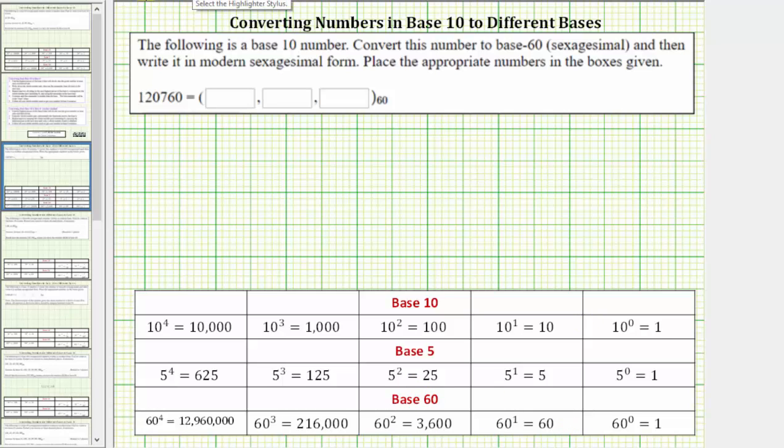Starting on the far right and working left, we have the 60 to the zero power or ones place value, 60 to the first or 60s place value, 60 to the second or 3,600 place value, 60 to the third or the 216,000 place value, and so on.